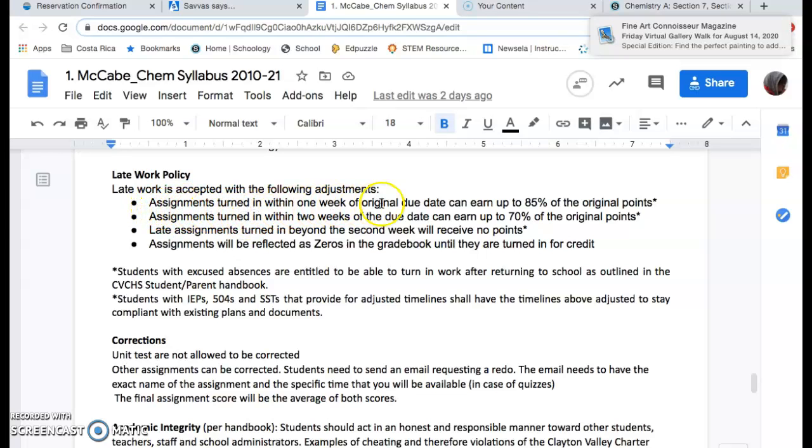Assignments turned in within one week of the original due date earn up to 85%. Assignments turned in within two weeks get 75%. Assignments submitted after two weeks gets no credit. Let's think about this. Say there's an assignment that's worth 10 points and there was a due date and you missed the due date. The maximum you can get after the due date for a whole week is 8.5 points if the assignment's worth 10 points.